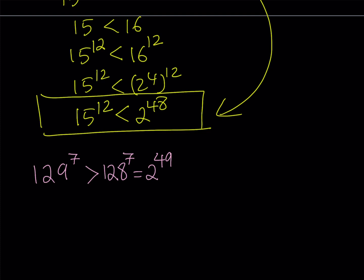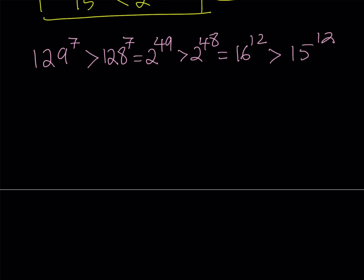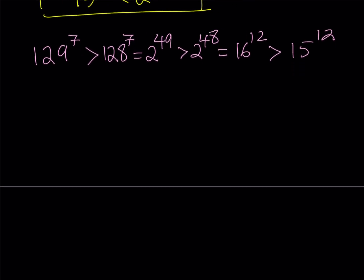And as you know, 2 to the power of 49 is always greater than 2 to the power of 48, which can be written as 2 to the 4th to the power of 12, which is 16 to the power of 12. And 16 to the power of 12, of course, as you know from here, is greater than 15 to the power of 12. And what does this give us? This tells us that from the transitive property of inequalities, we can safely say that 129 to the 7th power is greater than 15 to the power of 12.